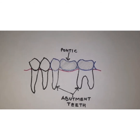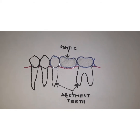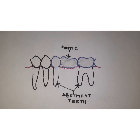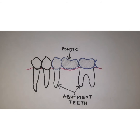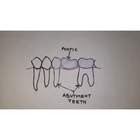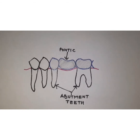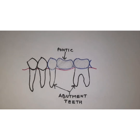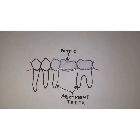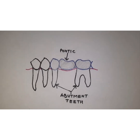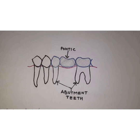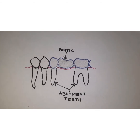Abutment teeth should have good bone support, which will ensure they are strong and able to bear functional forces. They should also have a good periodontal status — each abutment tooth should be periodontally sound, with no signs of inflammation, gingival bleeding, or periodontal pockets, and there should be no gingival swelling, redness, or irritation in the area of the abutment teeth.